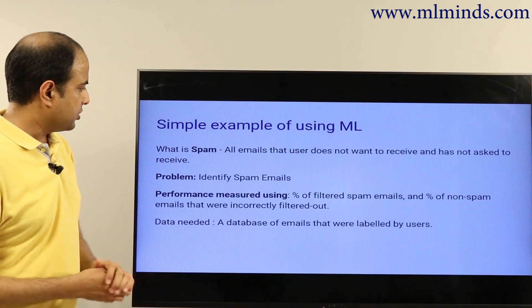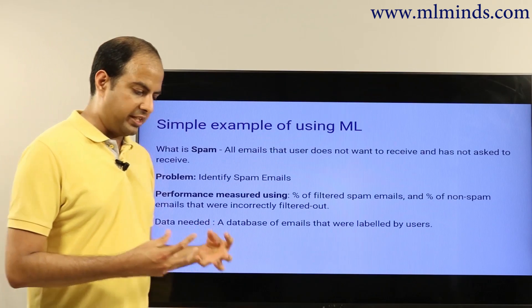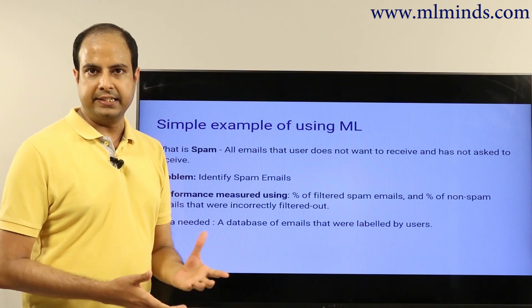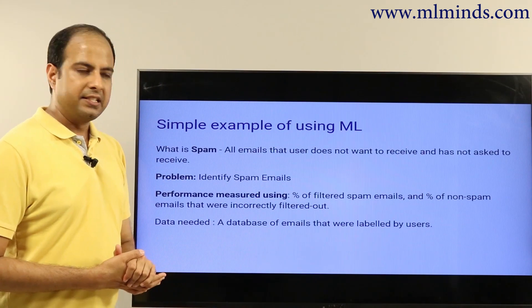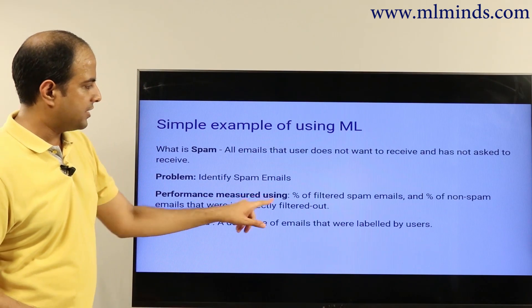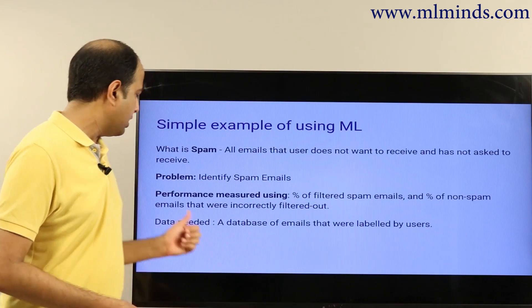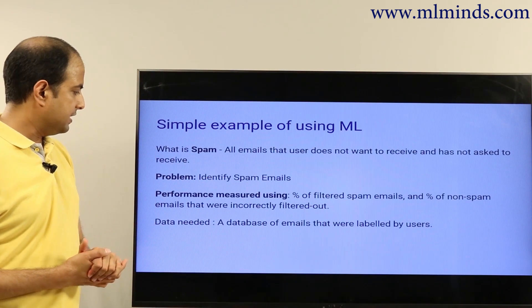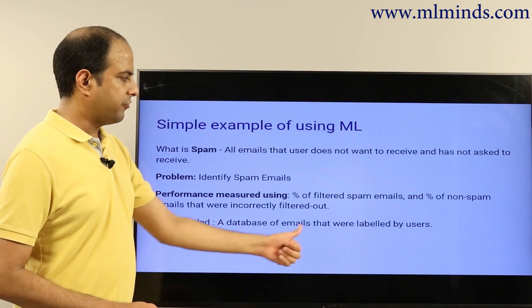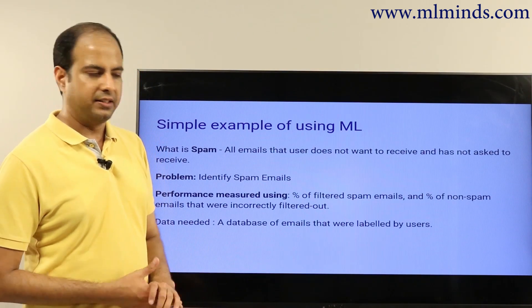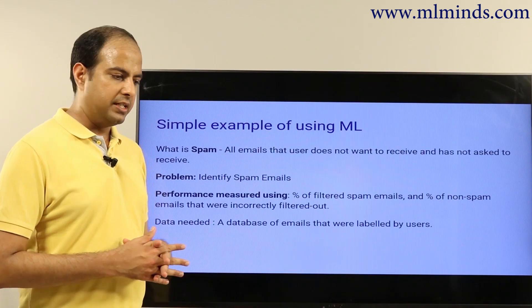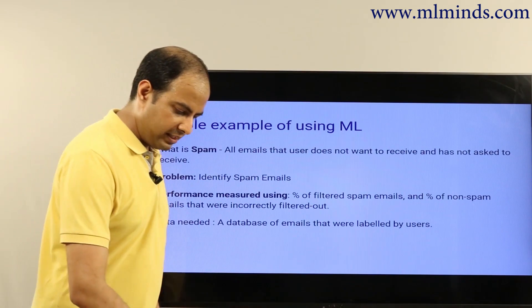Spam refers to all emails that a user does not want to receive or has not asked to be delivered. Machine learning models use labeled training data to learn a classifier that accurately predicts whether an email is spam or not. Accuracy is measured in terms of the percent of spam emails correctly filtered and the percent of non-spam emails incorrectly filtered out. Supervised machine learning models need a database of emails labeled by users — perhaps a thousand spam and a thousand non-spam emails — so the classifier can do case-based learning and come up with a good model.